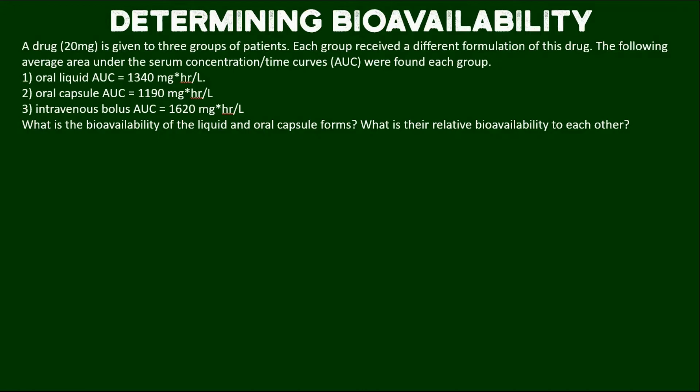Hi everybody. In today's video we're going to look at how we calculate bioavailability given certain amounts of information we have from different formulations of a given drug. Here's the problem: a drug at 20 milligrams is given to three groups of patients, each group receiving a different formulation. The following average area under the serum concentration-time curves, commonly called AUCs, were found for each group.